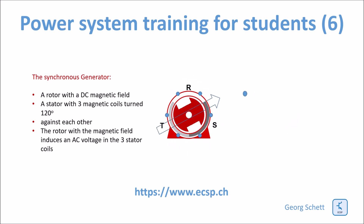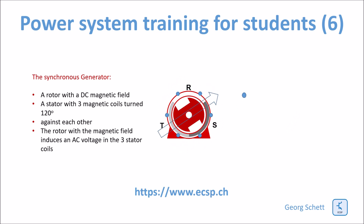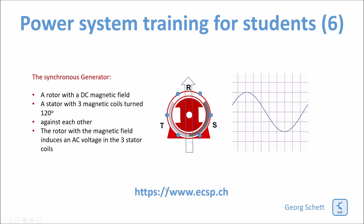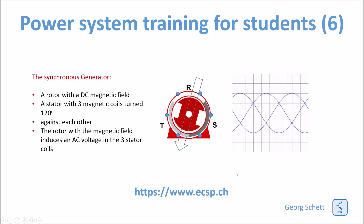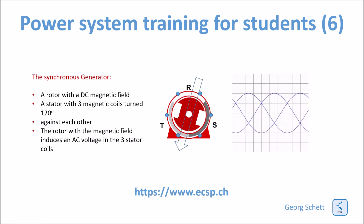Here we can see how this rotating rotor is inducing a sinusoidal waveform voltage in one of the three coils. Since there are three coils, there are also three waves, one in each of the coils.